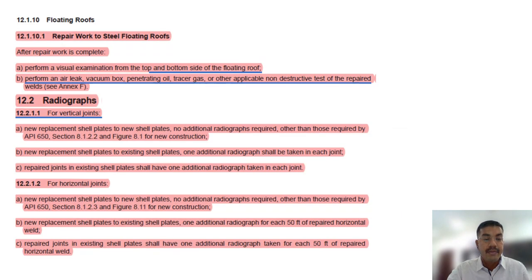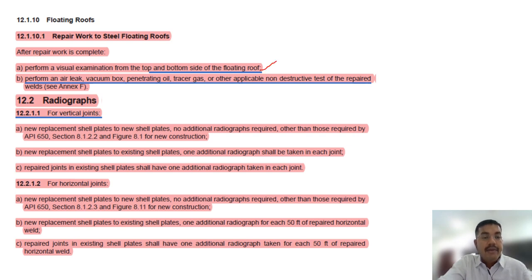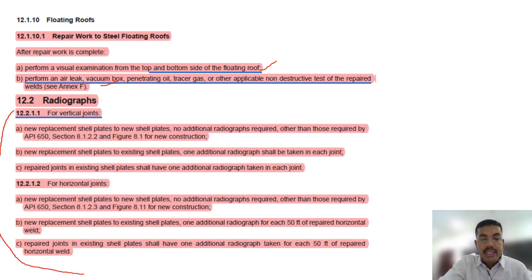If there is a floating roof, visual examination from the top and bottom side of the floating roof shall be performed. For repair of air leaks: vacuum box, penetrating oil, pressure gas, or any other applicable non-destructive testing method shall be applied for the floating roof.